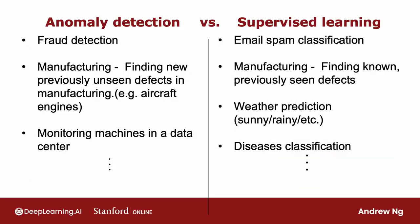We have already seen fraud detection being one use case of anomaly detection, although supervised learning is used to identify previously observed forms of fraud. We've seen email spam classification typically being addressed using supervised learning. You've also seen the example of manufacturing, where you may want to find new previously unseen defects — such as brand new ways for an aircraft engine to fail — that you still want to detect even without positive examples in your training set. In manufacturing, supervised learning is also used to find known and previously seen defects.